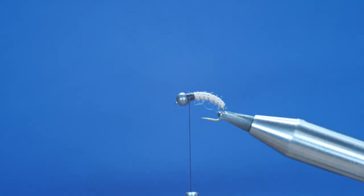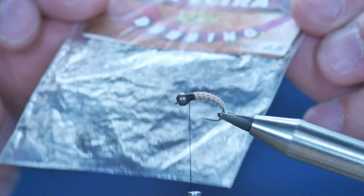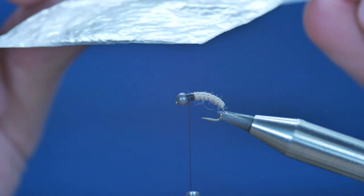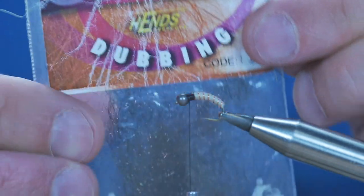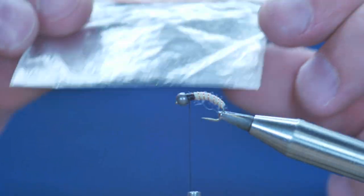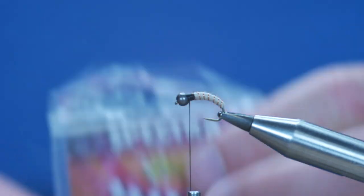Okay, so for the thorax I'm going to use a little bit of this stuff. It's a spectra dubbing. This is quite an old packet, I'll need to try and get some more, but it's a black glistery dubbing, and it's number 45.